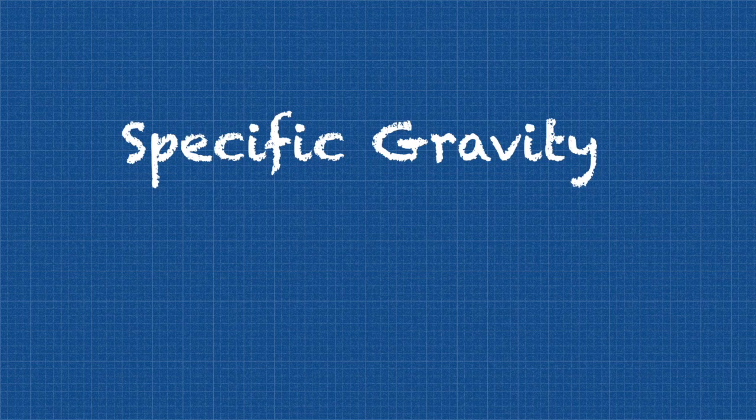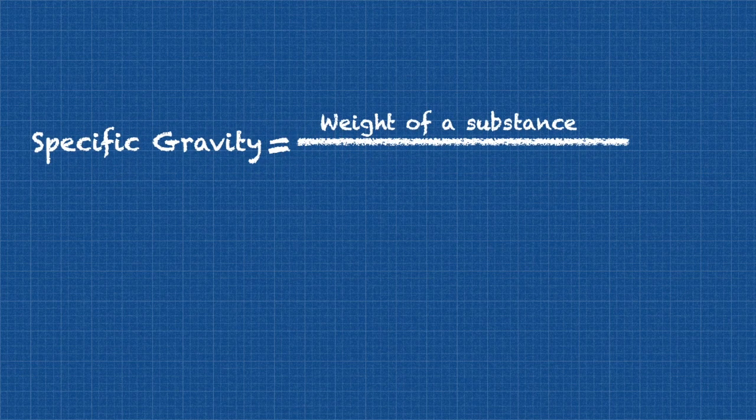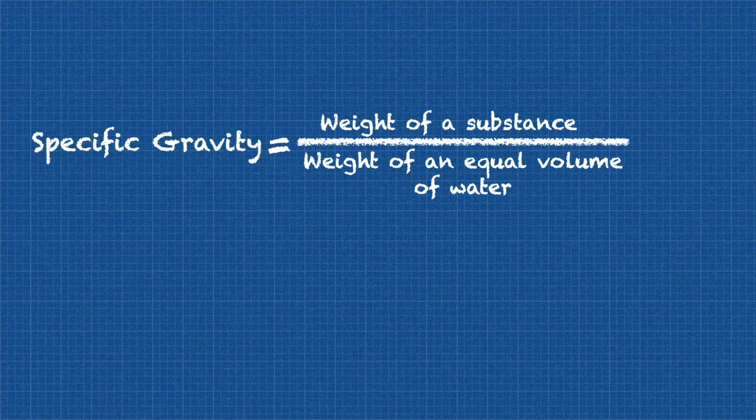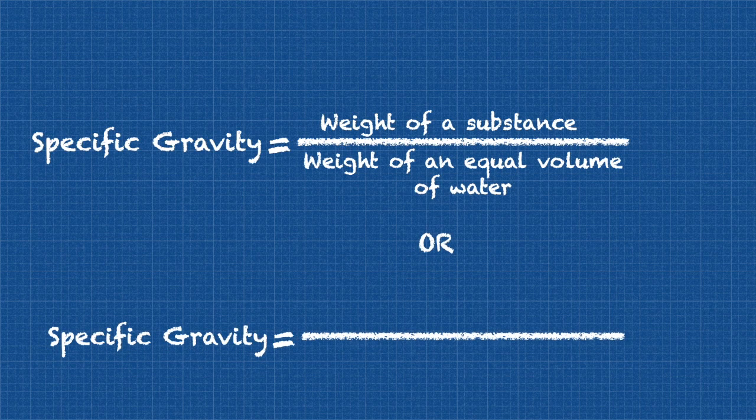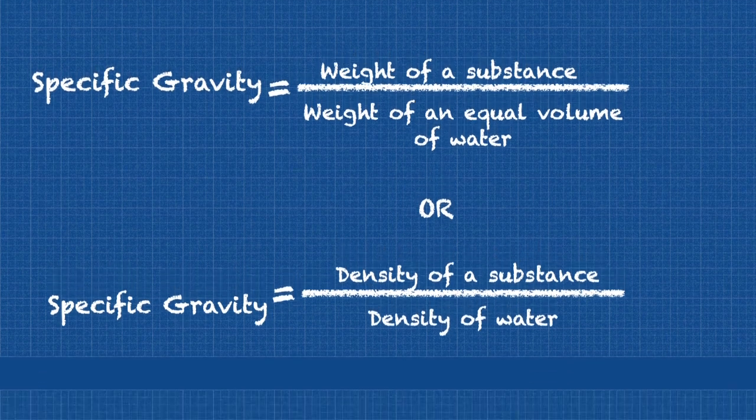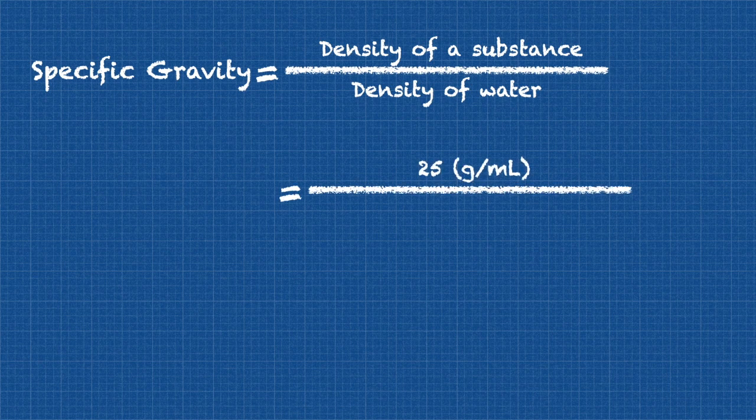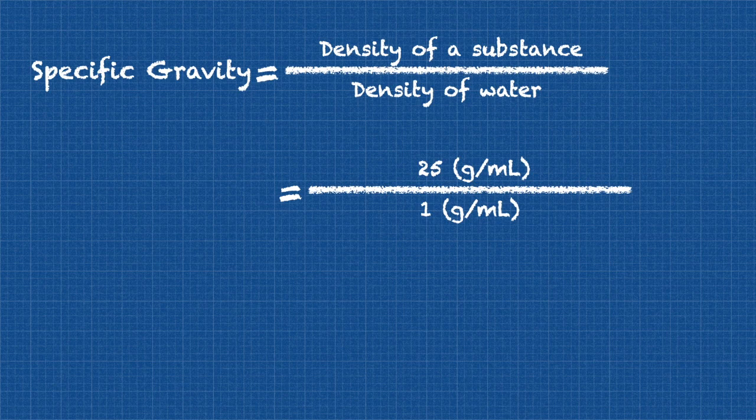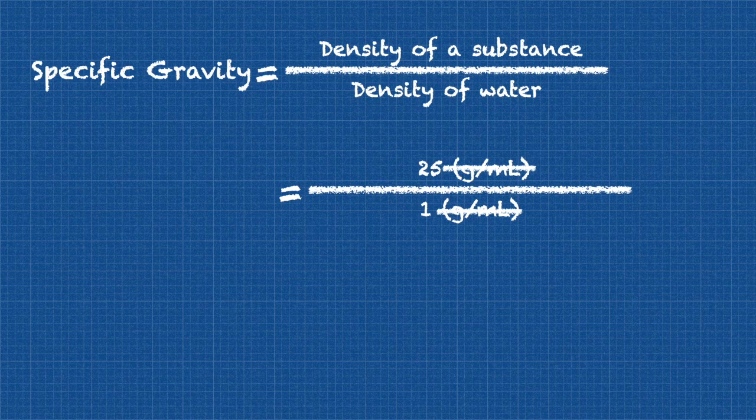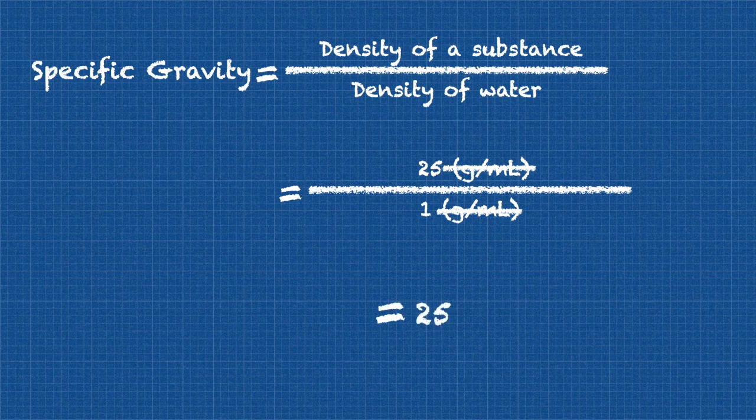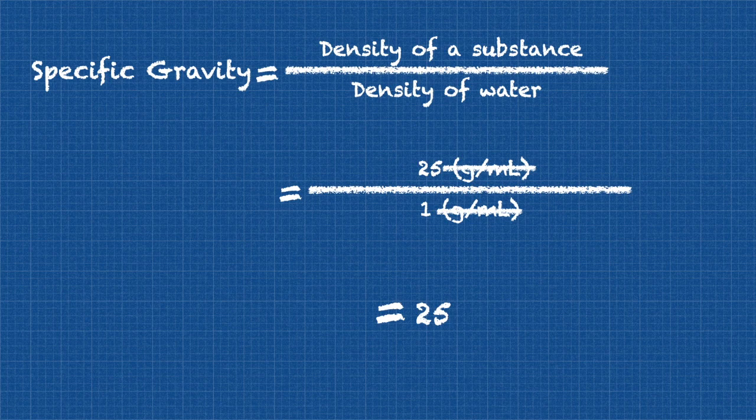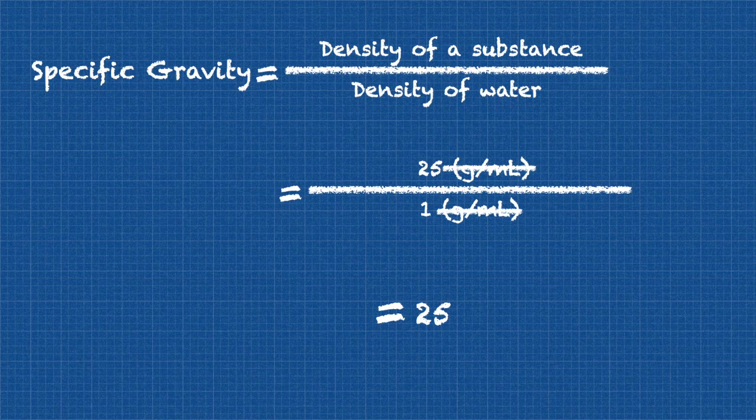To find the specific gravity of solids and liquids, the following formulas are used. Specific gravity equals weight of a substance over the weight of an equal volume of water, or specific gravity equals density of a substance over the density of water. Let's look at an example. The density of our unknown substance is 25 grams per milliliter, and the density of water is 1 gram per milliliter. The units will cancel out. Our final value will be 25. Because the units in the numerator and the denominator are always the same, they'll always cancel out. Which means, specific gravity values are never expressed in units, but rather as pure numbers. The same formula is used for gases.